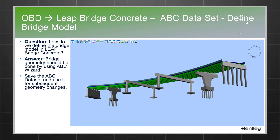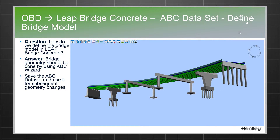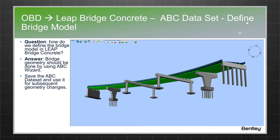Basically, we recommend the user to model the bridge using the ABC wizard. Once the bridge is modeled, the user can save the model as an ABC dataset. They can save it as a master dataset and reuse it again and again for subsequent geometry changes in their project.